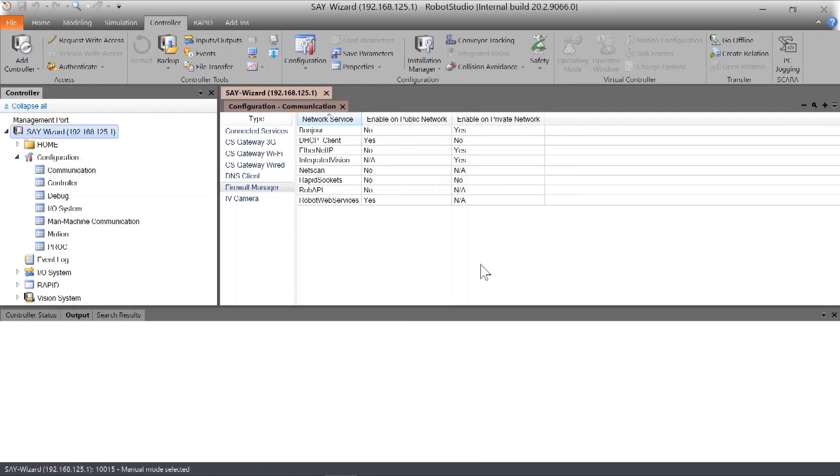To allow Robot Studio to change the settings of the public network, you first have to enable that. That is done on the flex pendant.